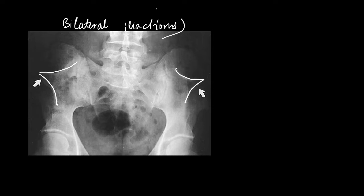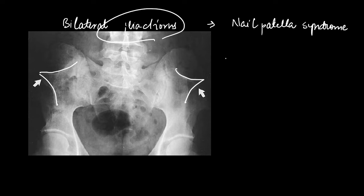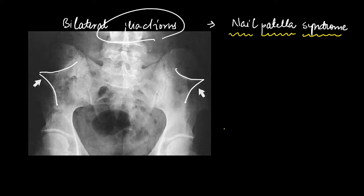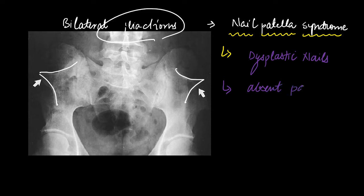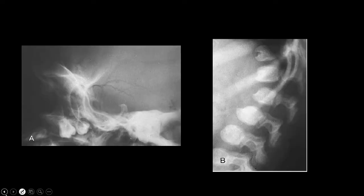These bilateral iliac horns are seen in patients of nail patella syndrome. This is a topic that is very frequently asked in exams and can be asked in your NEET PG exam as well. In these patients, the nails are dysplastic and there is absent patella.